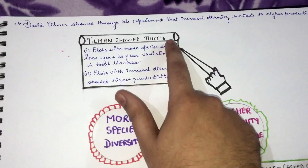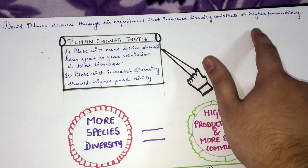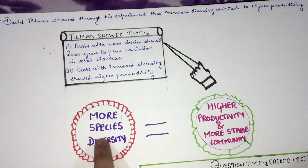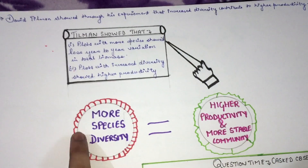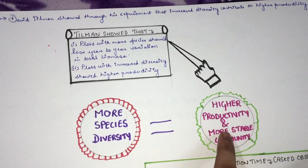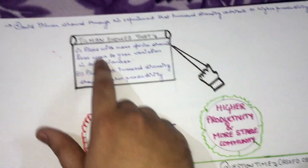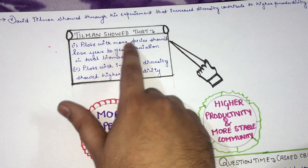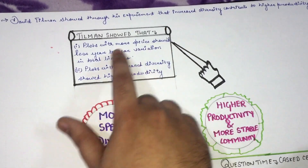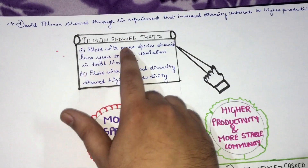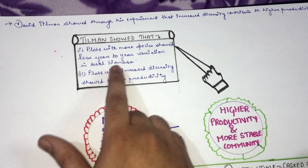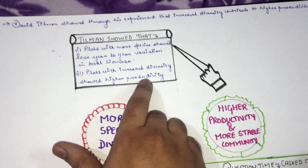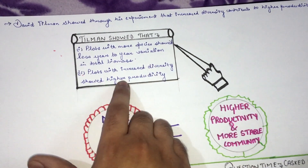According to David Tilman, who showed this through his experiments, increased diversity contributes to higher productivity. More species diversity means higher productivity and a more stable community. Tilman found that plots with more species showed less year-to-year variation in total biomass.